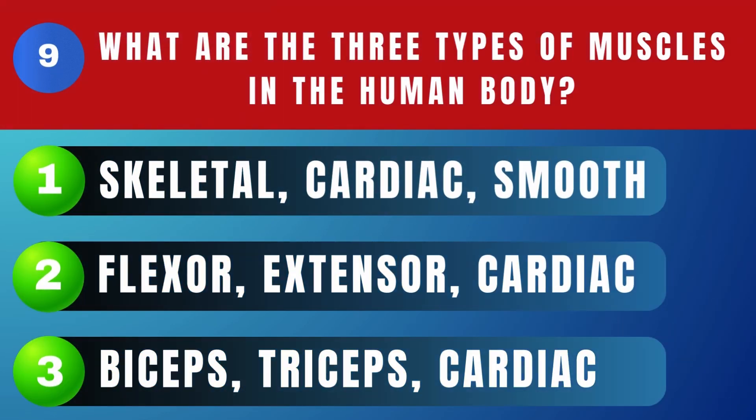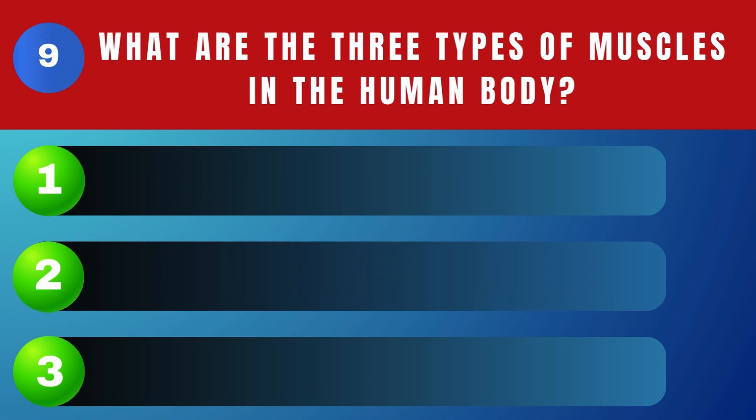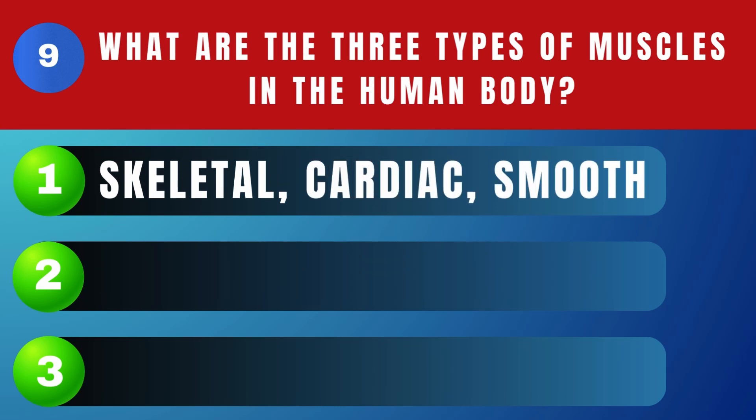What are the three types of muscles in the human body? Skeletal, cardiac, and smooth.